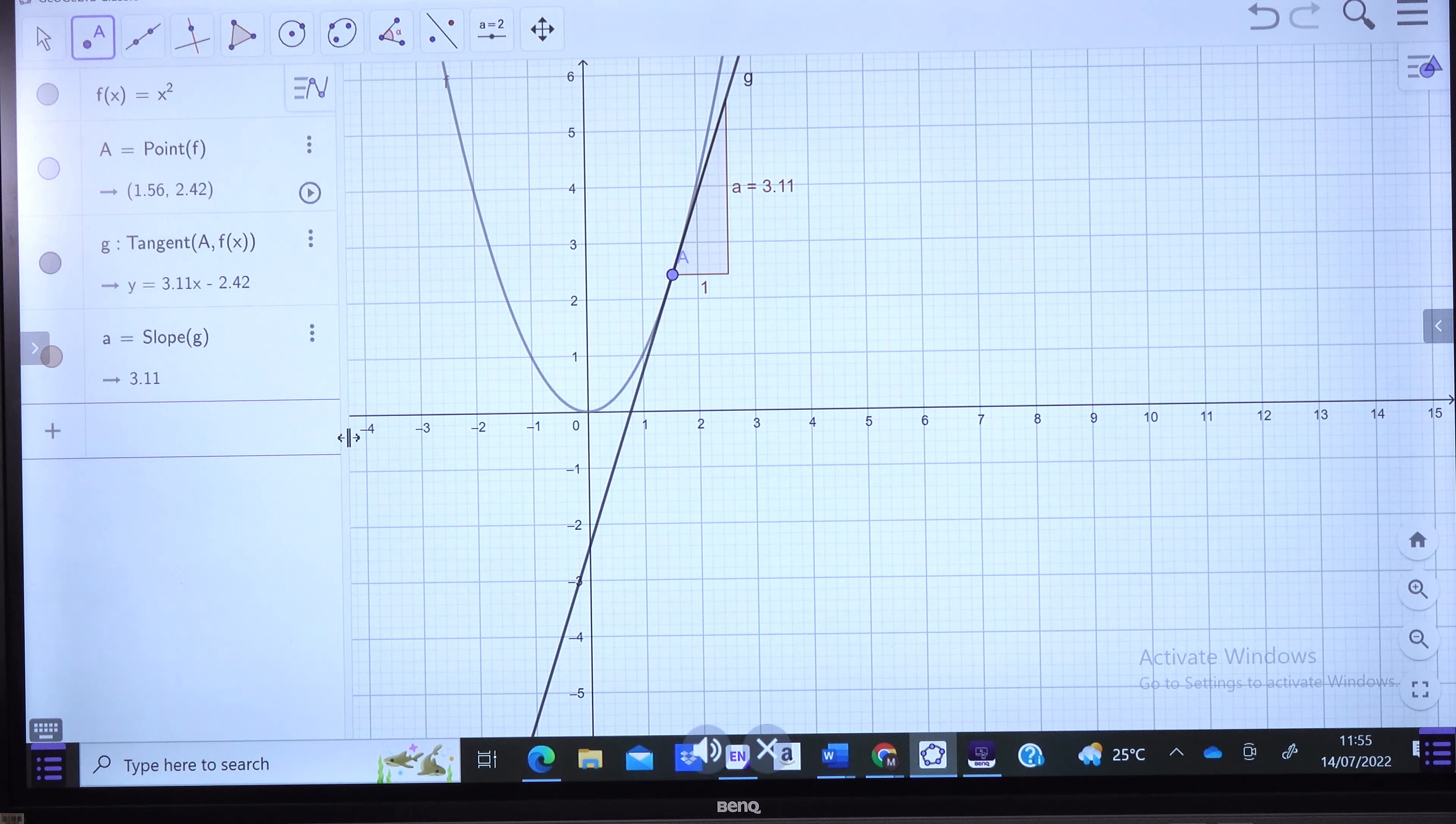Now, supposing we have another point, that is point C, with coordinates x at point A, here, and then the y-value is the slope of this line. We are going to have a point C as indicated.